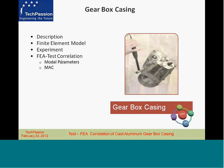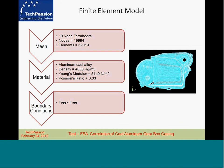When we do correlation, we also talk about modal parameters and model assurance criteria. The picture here shows the finite element model of the gearbox casing. Three key aspects of the model: the mesh was made with 10-node tetrahedral elements, and there are 20,000 nodes and 69,000 elements.